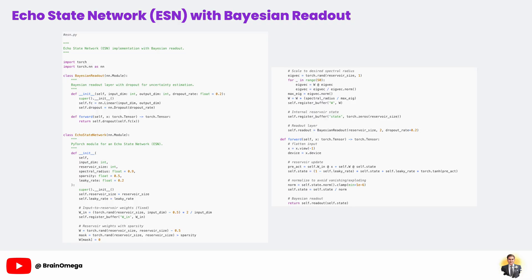Crucial for agents that need to balance exploration and exploitation. All together, this echo-state network with Bayesian readout gives us a lightweight, powerful, and uncertainty-aware foundation for reinforcement learning agents, especially in environments with sequential structure and uncertain outcomes. This combination allows our agent to efficiently learn from experience, model temporal patterns, and make safer, more informed decisions.